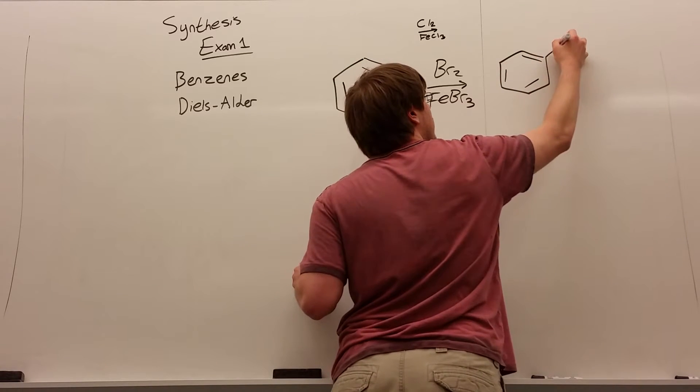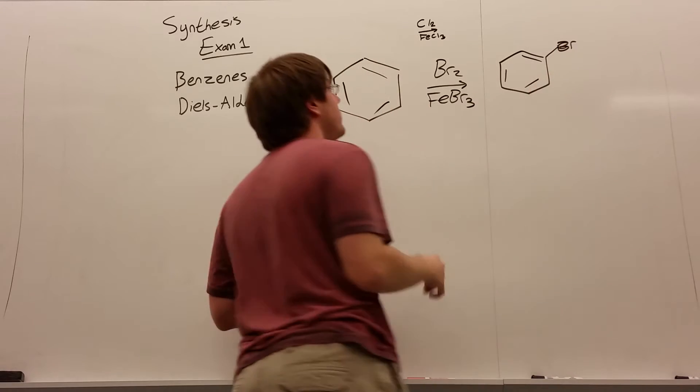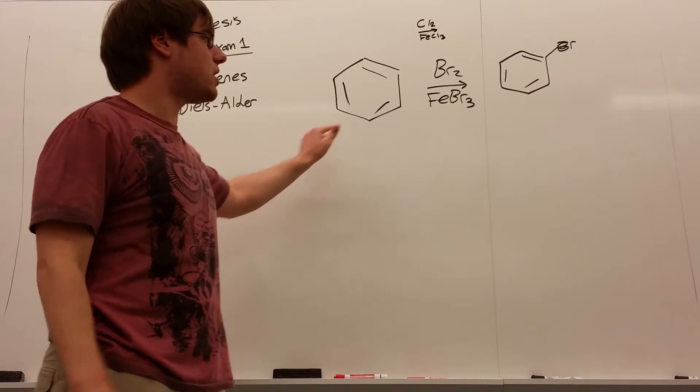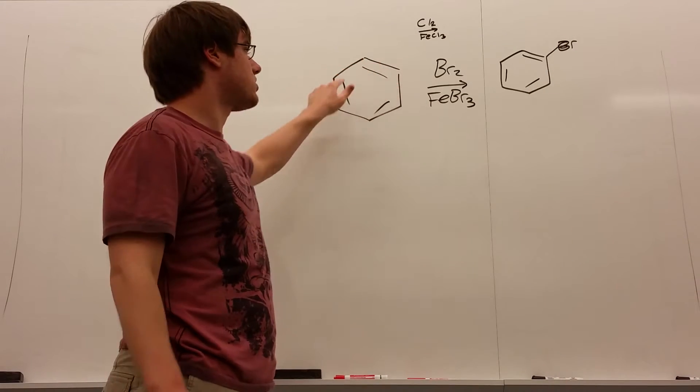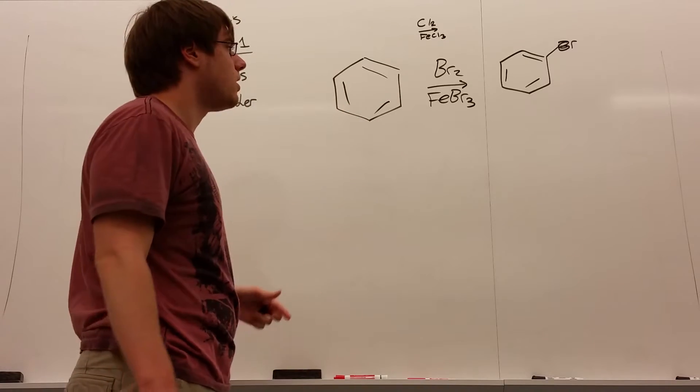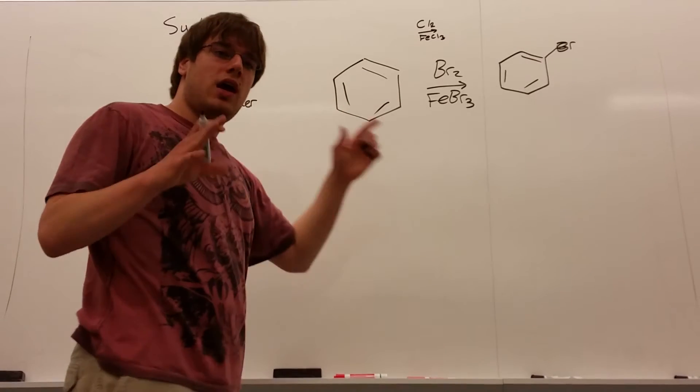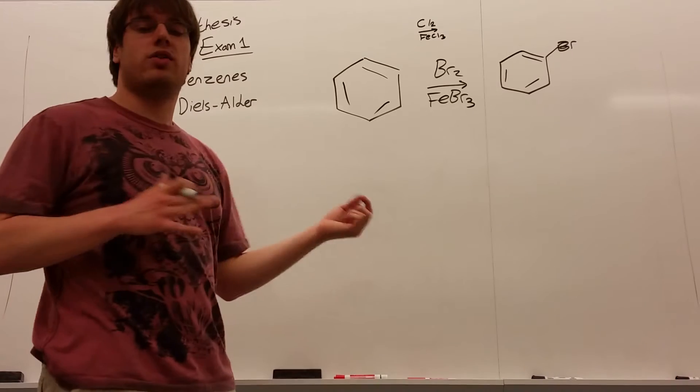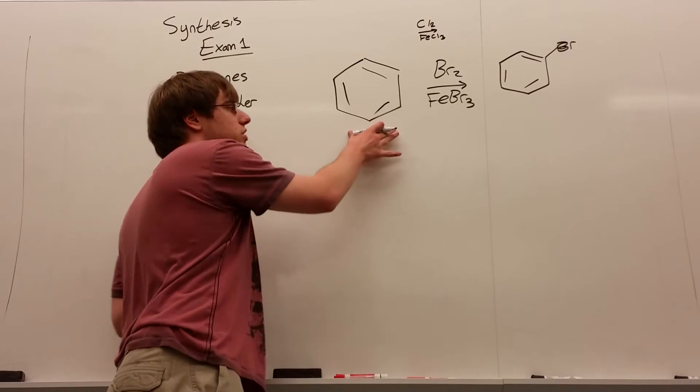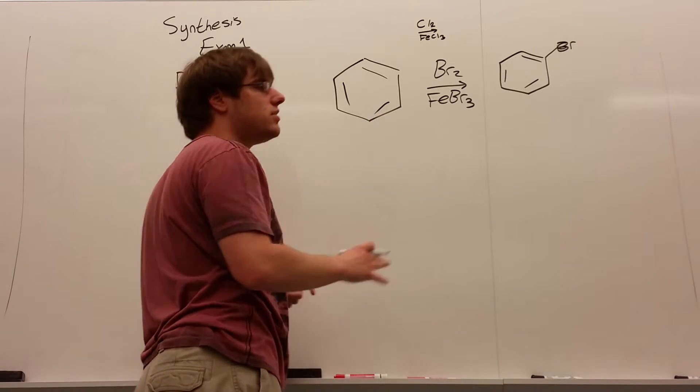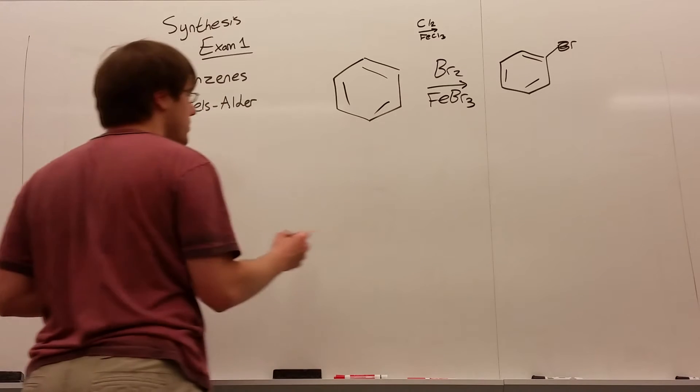For example, it adds a bromine here. Now there is nothing on this benzene, which means that bromine can get added to any of these carbons, and it would be the same thing. But we'll see in a couple minutes that there are some particulars for where things get added. But if you start with a benzene with nothing on it, what gets added to that benzene can go anywhere.